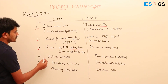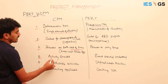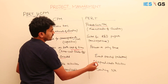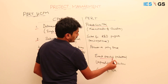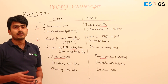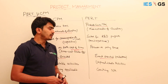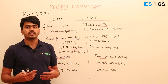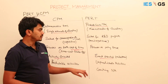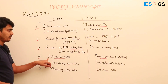The fourth difference: CPM is activity oriented whereas PERT is event oriented. In R&D projects, each milestone gives more visibility into what the next activities will be, making PERT more event oriented, whereas CPM is activity oriented.